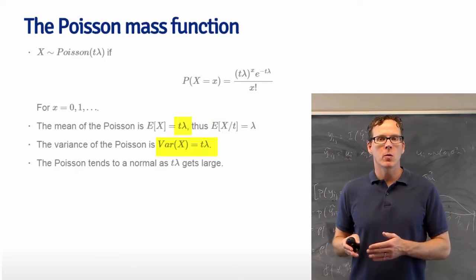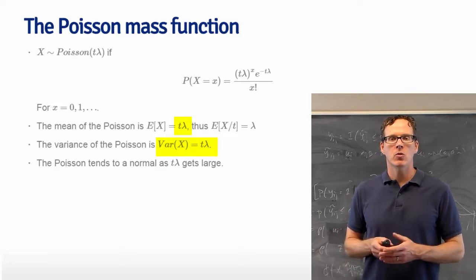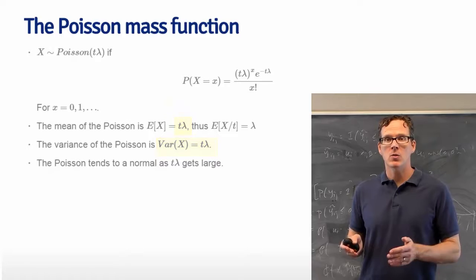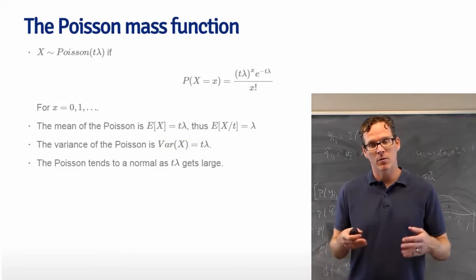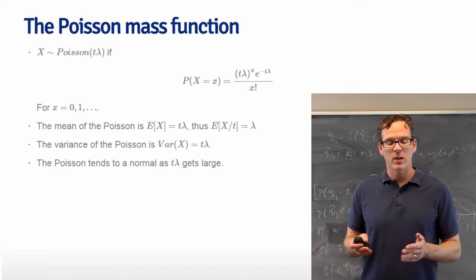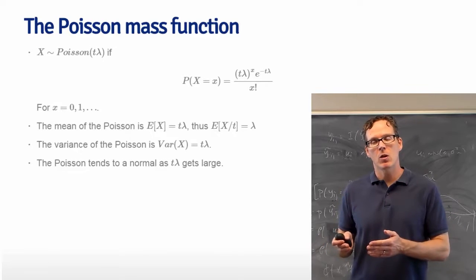The variance is equal to the mean, so the variance is t lambda. That's an assumption of our model that we can check, and we have some potential solutions if it doesn't hold.